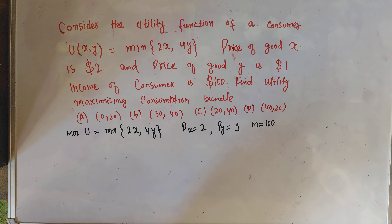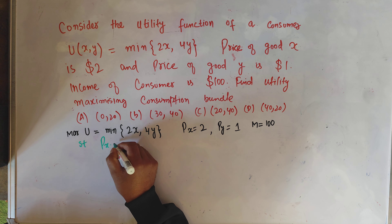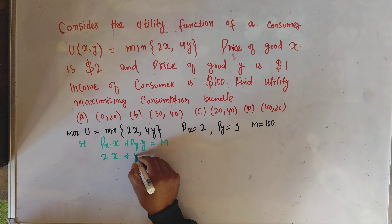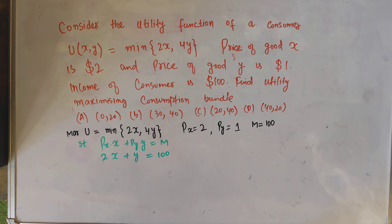In this video we will solve a question on the Leontief utility function. The question is: consider the utility function of a consumer — utility derived from consuming goods x and y — which is equal to the minimum of 2x comma 4y. The price of good x is $2, price of good y is $1, and income of the consumer is $100. We have to find out the utility-maximizing consumption bundle.